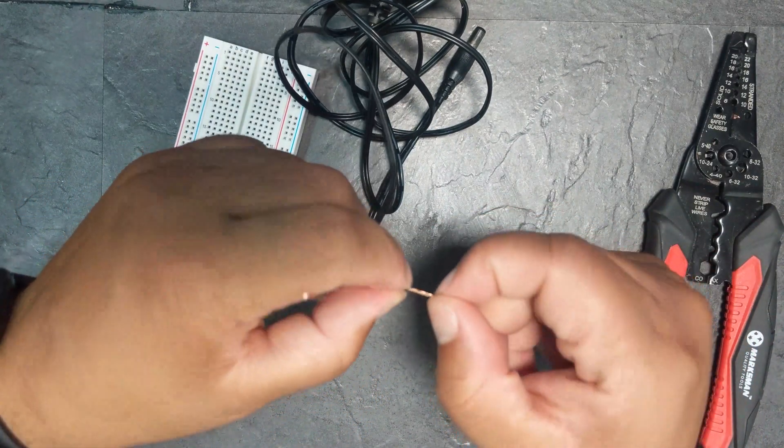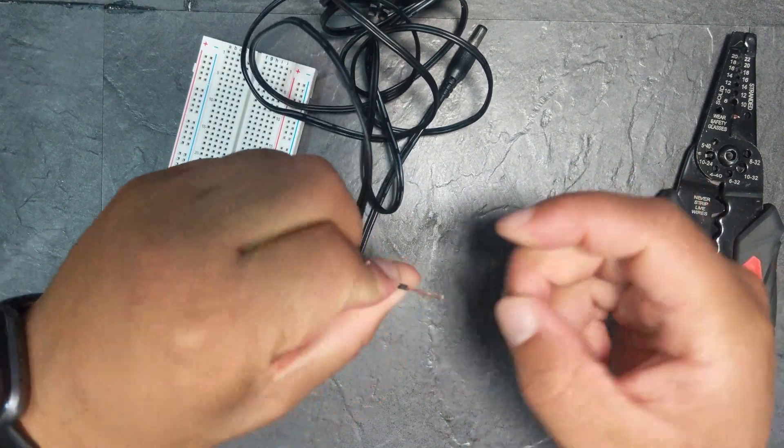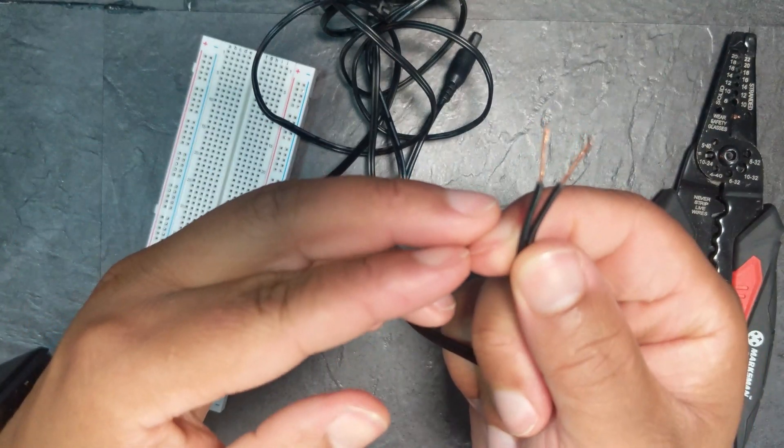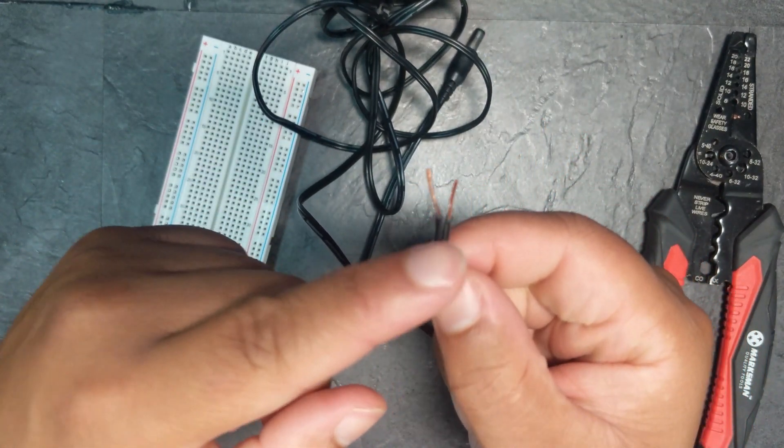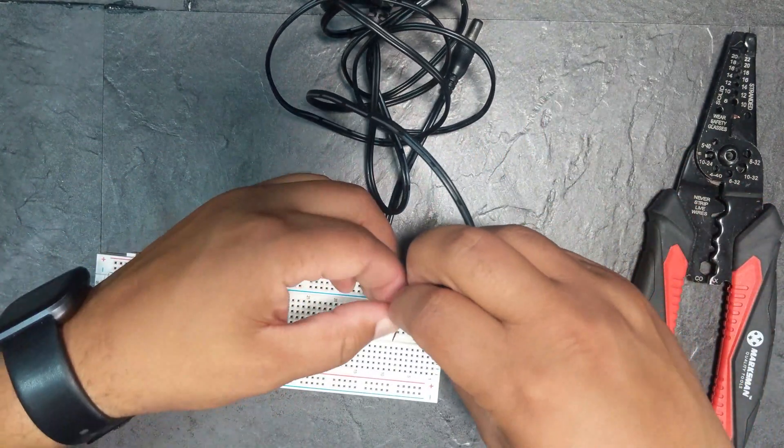What would be ideal now, which I'm not gonna show you in this video, but ideally it would make sense to twist these like so, and then add some solder onto it. If you add some solder it stops it from coming apart.